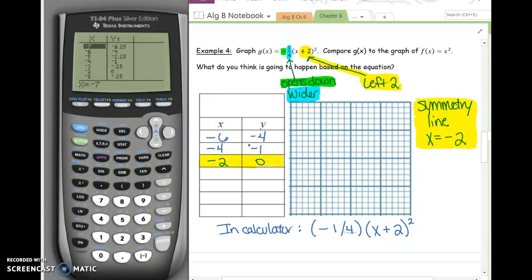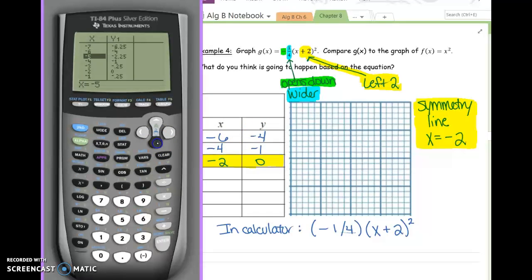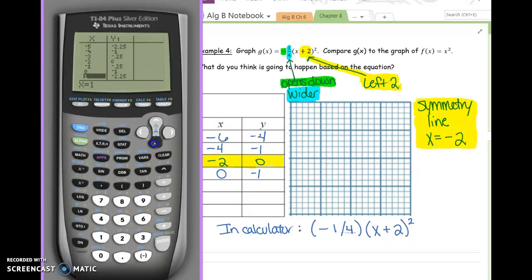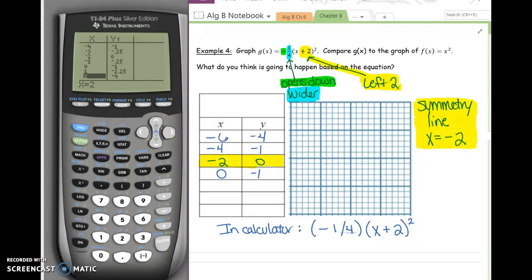On the other side of negative 2, we've got 0, negative 1. And let's get one more. 2, negative 4.